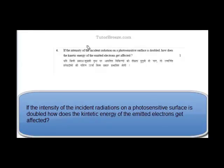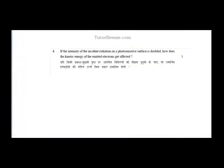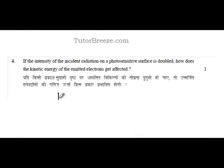The kinetic energy of the emitted electrons is given by KE = hν - φ₀, where hν is the energy of the incident radiation and φ₀ is the work function of the material.